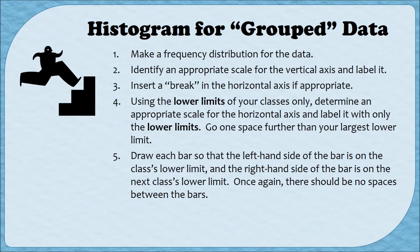Step five is also a little different. In the ungrouped histogram, bars were centered on each value so the label was in the middle of the bar. This time, we want to visualize moving from lower limit to lower limit, so the bars also move from lower limit to lower limit. The left-hand side of the bar is on the lower limit of the class it represents, and the right-hand side is on the next lower limit. As before, there are no spaces between bars to give the graph a continuous feel.